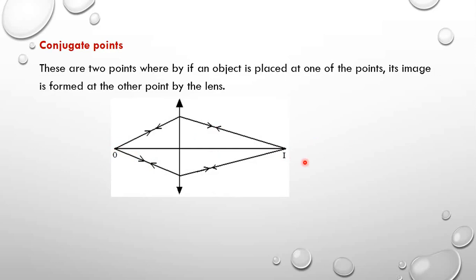The property of conjugate points is such that an object and its image at these points are interchangeable. If I place the object here, the image is here; I place the object there, the image is formed there.